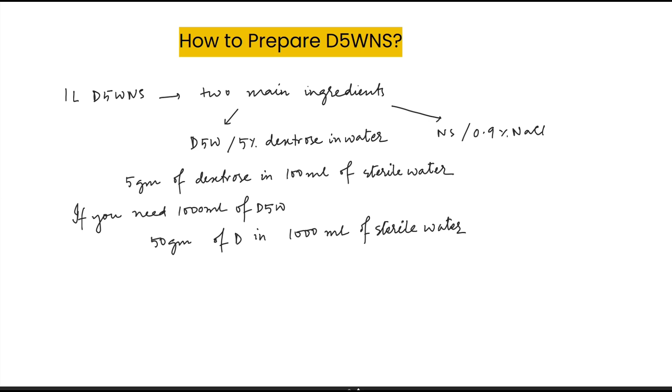Okay, now you need to prepare normal saline or 0.9% NaCl. So to make this you need 9 grams of NaCl dissolved in 1000 ml or 1 liter.